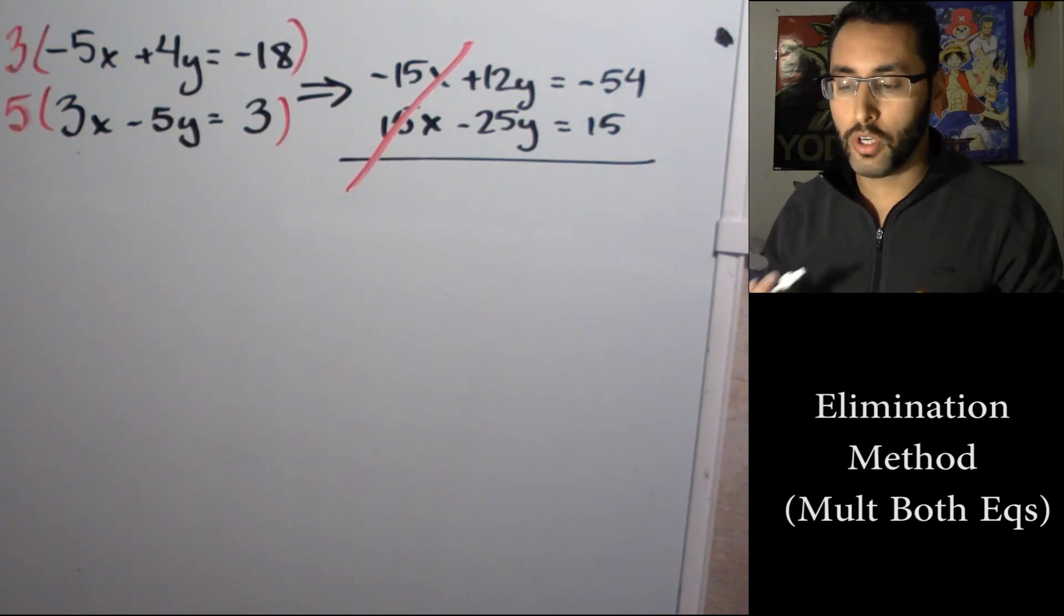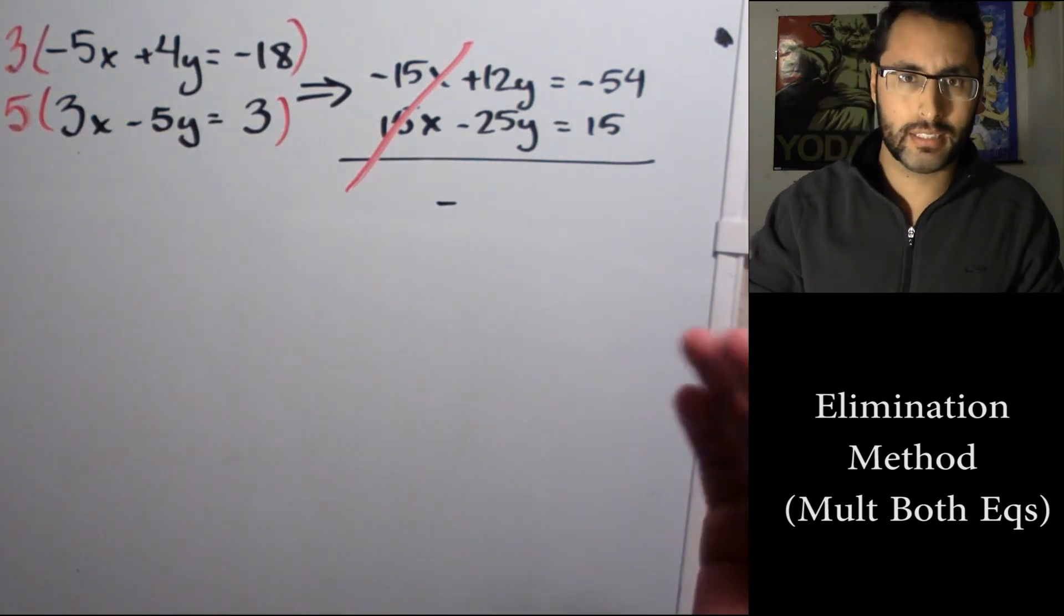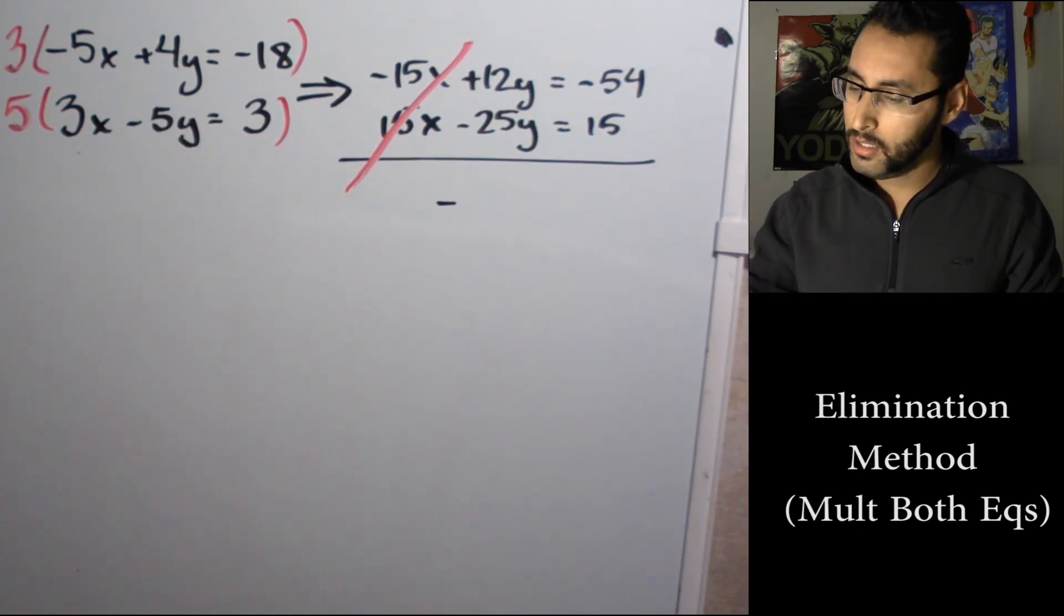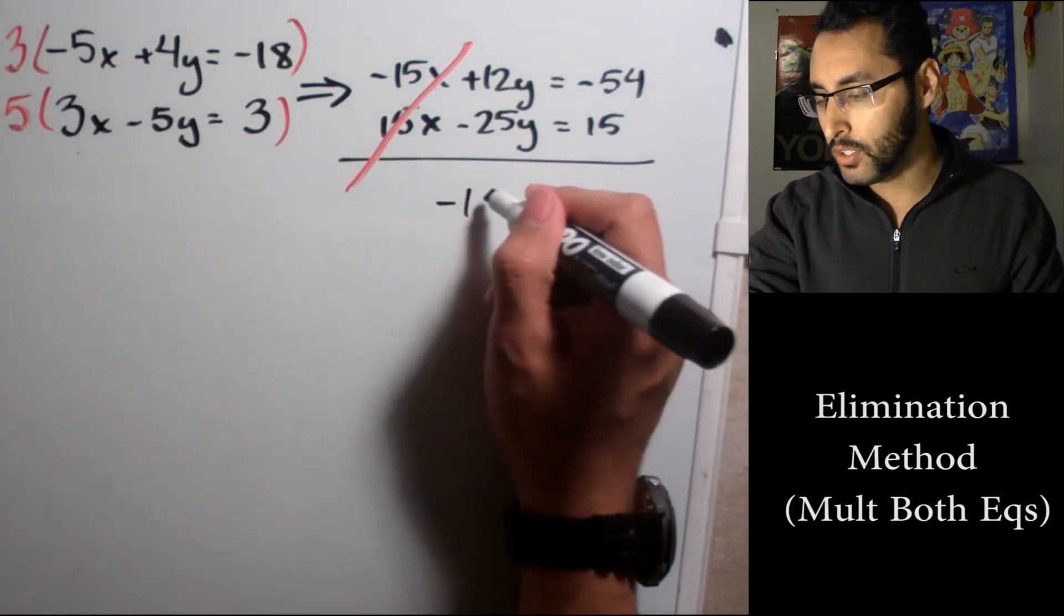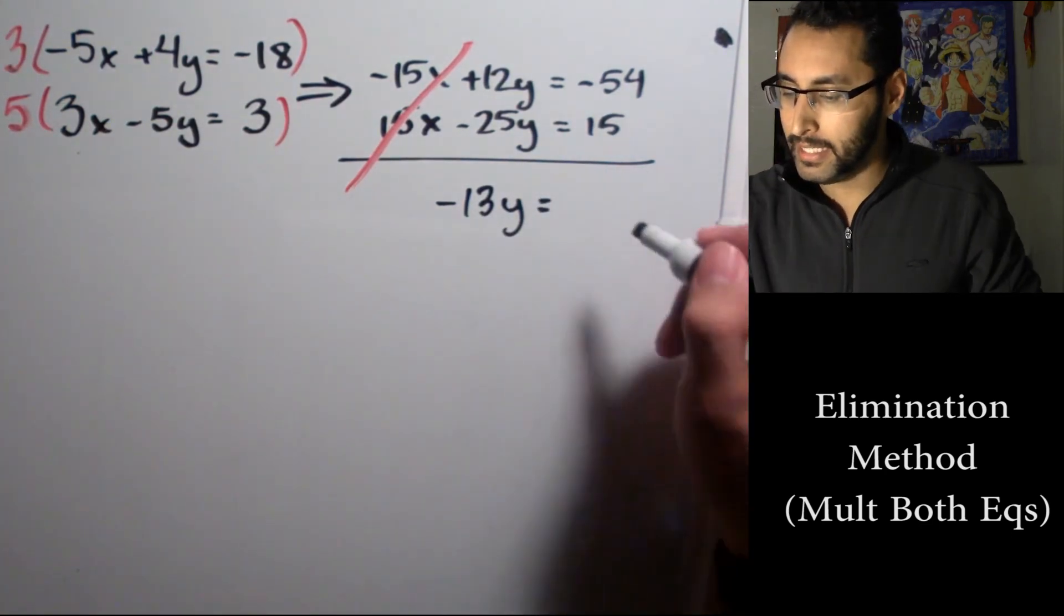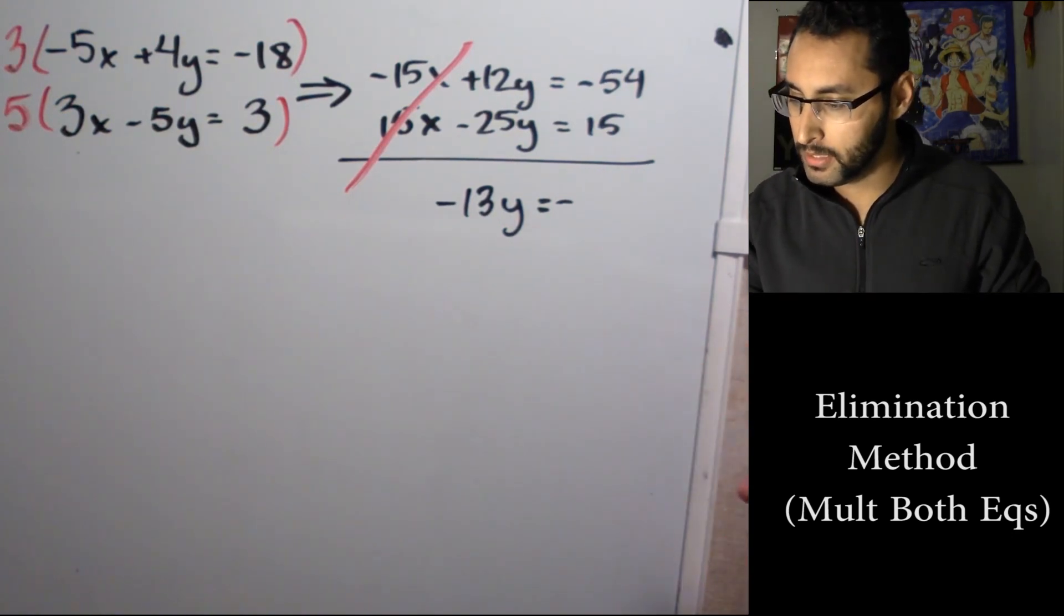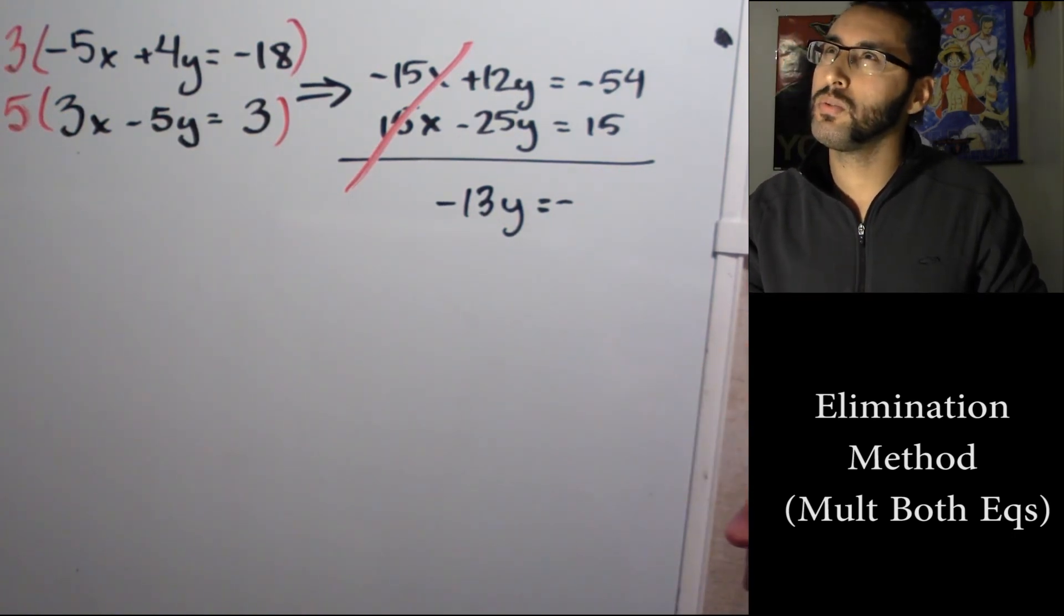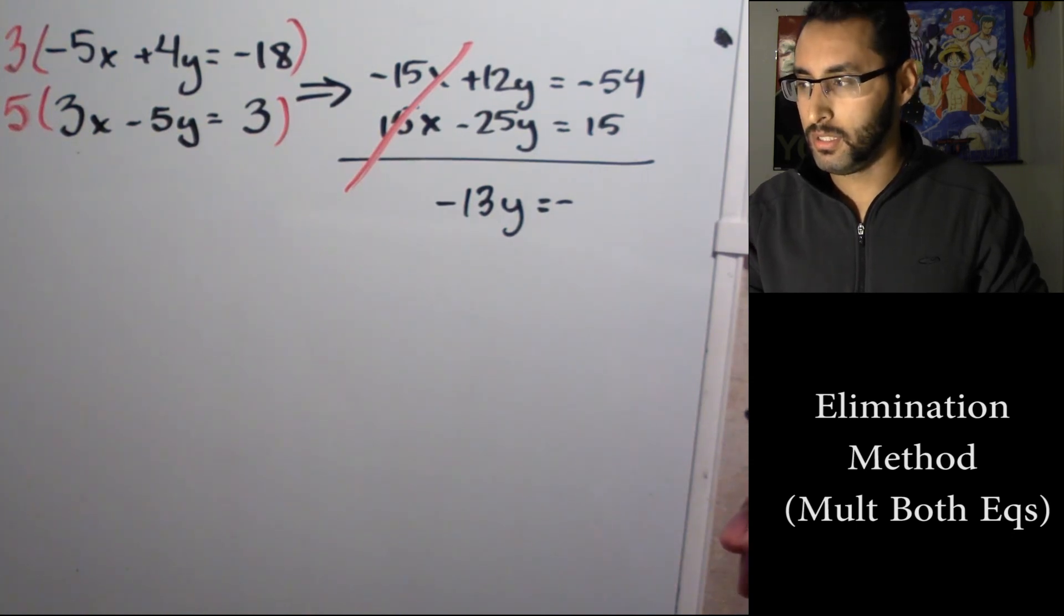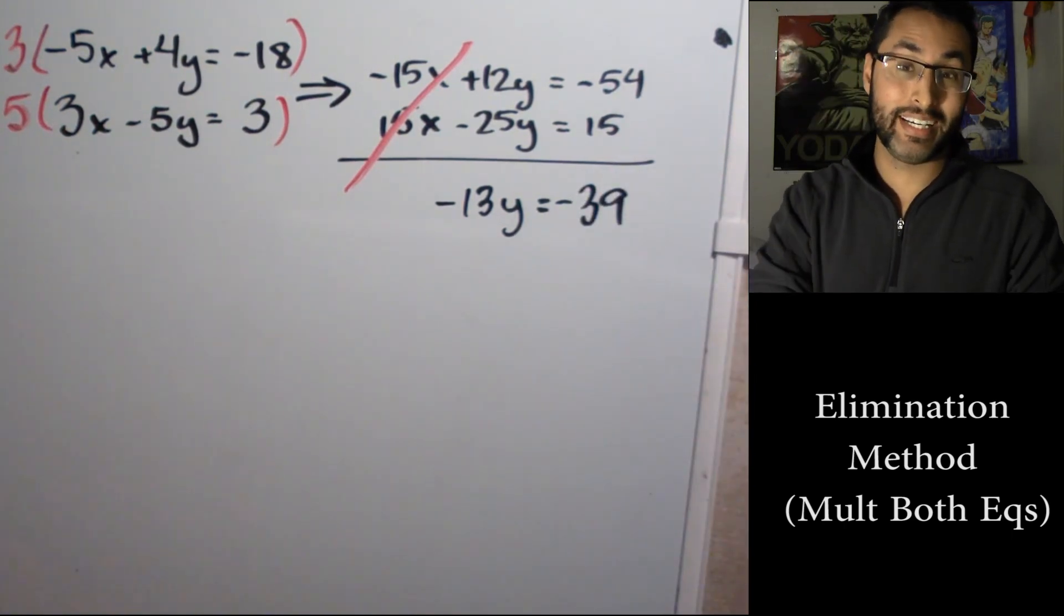So what we're going to do now is solve for our y's. If I combine these y's, positive 12 and negative 25, we're gonna get -13y. And equal to, we're gonna get a negative number for this, we're gonna get -39.